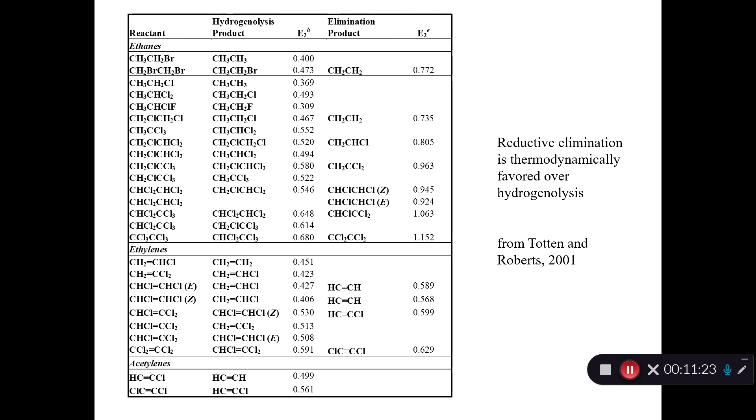Here's our redox potentials. I wrote a whole chapter of my dissertation on redox, calculating all these redox potentials. I calculated the redox potential for the hydrogenolysis reaction and also for the elimination reaction. This is E2H for hydrogenolysis and E2E for elimination. You see that wherever you have the ability to undergo both hydrogenolysis and elimination, the elimination is more favorable. 0.467 versus 0.735, elimination is more favorable. 0.52 versus 0.8, elimination is more favorable. 0.58 versus 0.96, elimination is favorable.